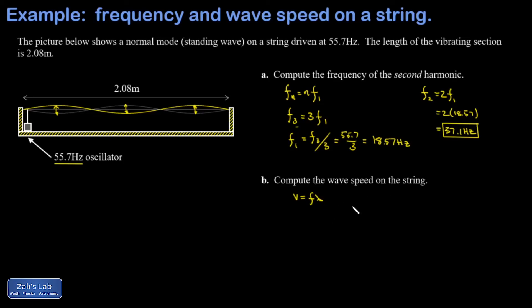But I think the easiest one to use is the second harmonic. We already know the frequency for it, and for the second harmonic it has two anti-nodes, and that means exactly one wavelength fits on the string. So I could immediately say the wavelength is 2.08 meters.